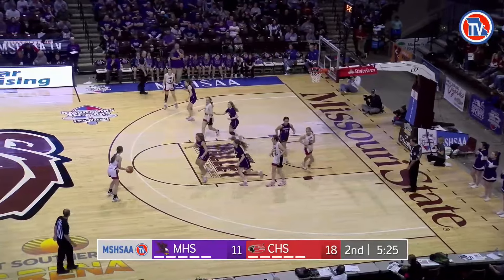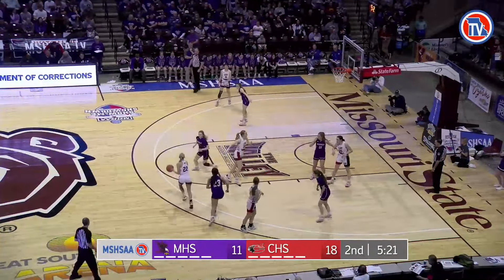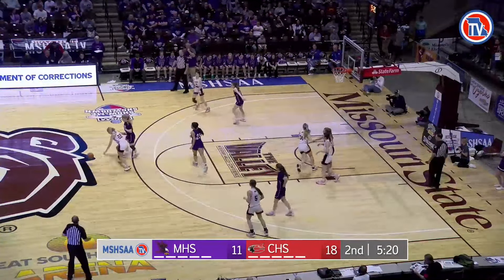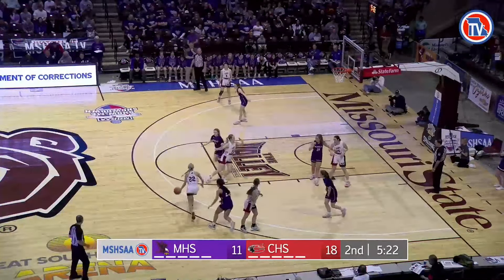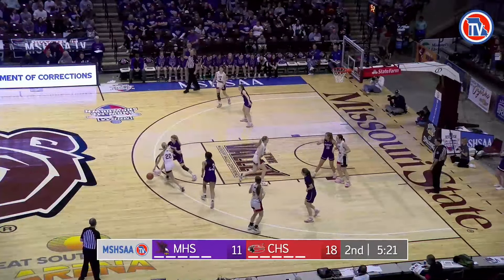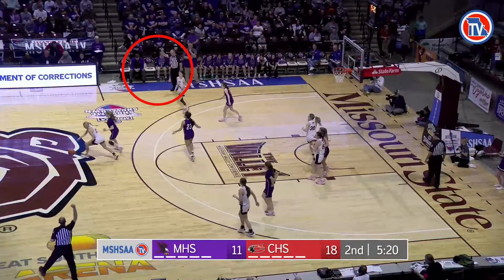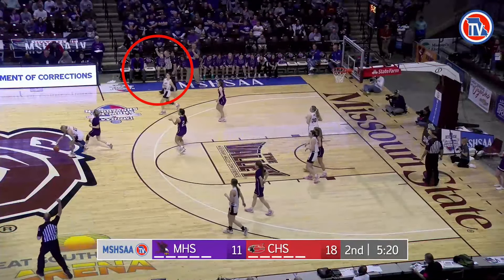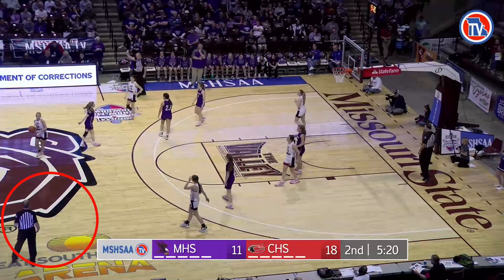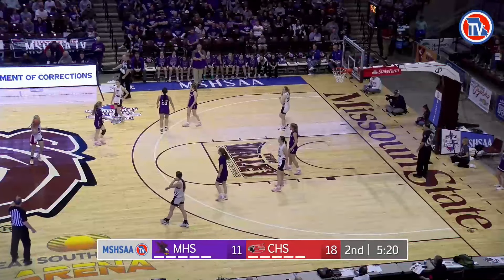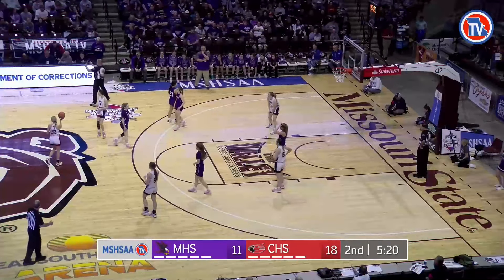As number 22 in white dribbles towards the center of the court, number 11 in purple jumps out and makes illegal body contact that hinders number 11's rhythm, speed, balance, and quickness. Both the center and trail officials appropriately have whistles on this play. Since the play was coming towards the center official, he appropriately took the play to the table. The trail official did an outstanding job of blowing and holding his signal, allowing the center official to complete the process. Tremendous team officiating.